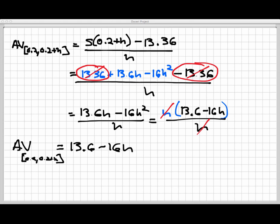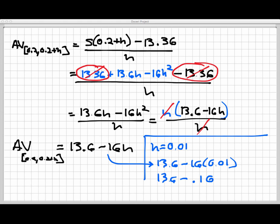And just as an example, let's redo the example we saw earlier. What is the average velocity from 0.2 to 0.21? Well, in that case, the h was equal to 0.01. And so the average velocity would just be 13.6 minus 16 times 0.01. That is 13.6 minus 0.16. And that gives you 13.44 feet per second. Which is what we got through a considerably longer process earlier.